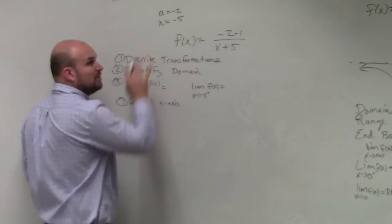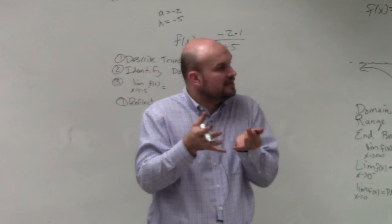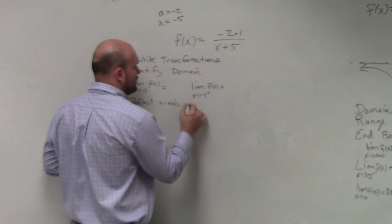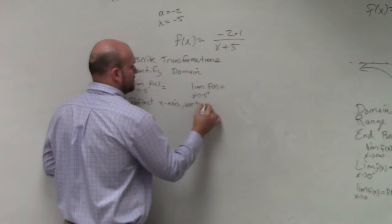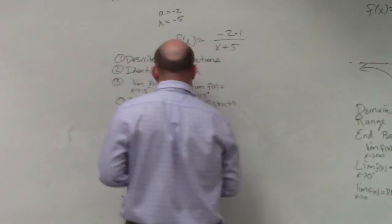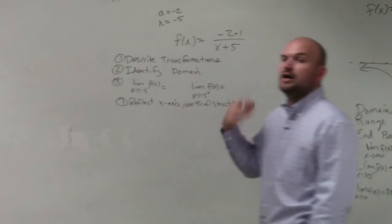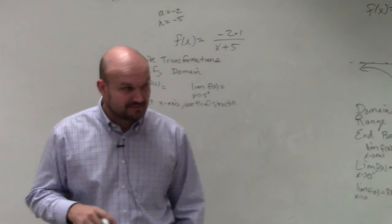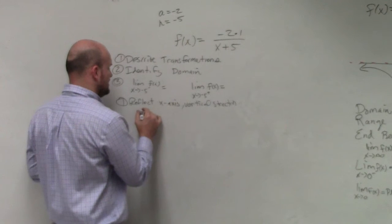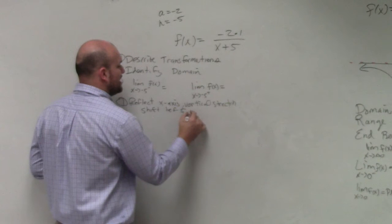And then we also are multiplying by a, which is a value greater than 1. So therefore, that is going to be a vertical stretch. So we have a vertical stretch by a factor of 2, we have a reflection over the x-axis, and then the last thing, we have x + 5, which is going to be shifting left 5 units.